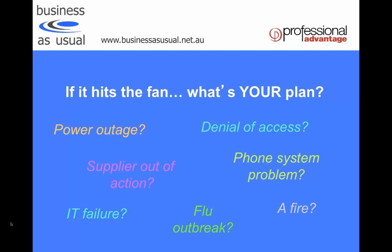Assuming all your staff are available is obviously not the right assumption in a business continuity plan. Other often-overlooked aspects include your phone system being down — the rest of the business might be running fine, but if your telephony is not working, that's very, very under-planned in most BCPs. People tend to focus on IT and building-related aspects.